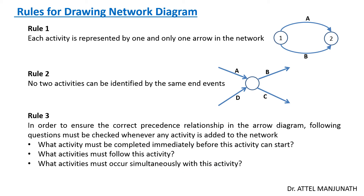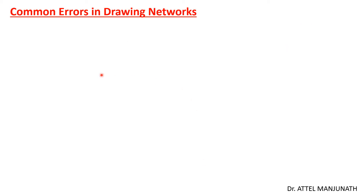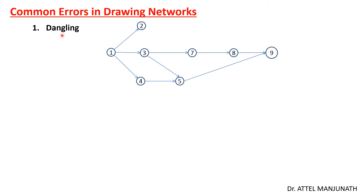When drawing network diagrams, we commonly make certain errors. The first is called dangling. Dangling is an error wherein an activity is completely away from the main direction or path of the network diagram — it is disconnected from the rest of the network. This kind of error is called a dangling error.